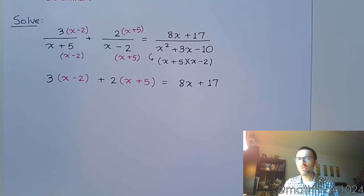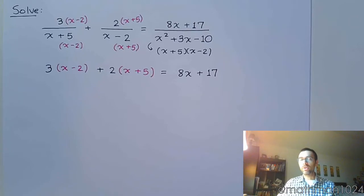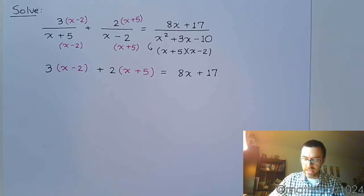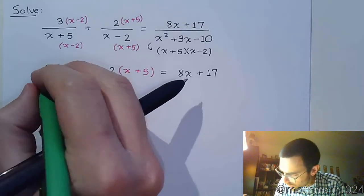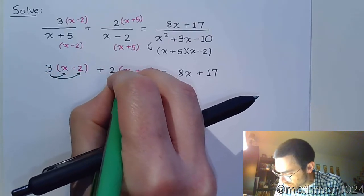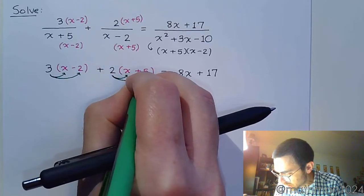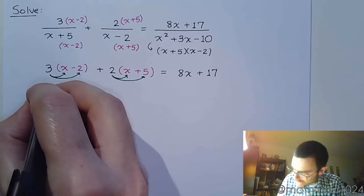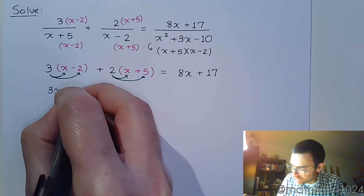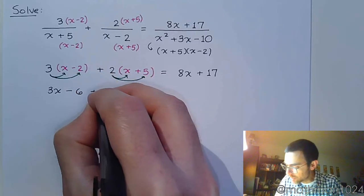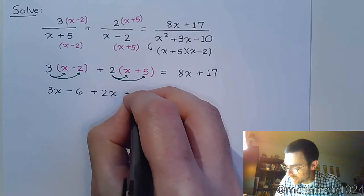Now in order for us to see what kind of equation we really have once the denominators are gone, we've got to multiply everything out. So let's distribute. Please make sure that you distribute correctly. If you need to draw your arrows, that way you make sure that everything gets distributed correctly, then please do so. So 3 times x is 3x. 3 times negative 2 is negative 6. Positive 2 times x is plus 2x and then plus 10.